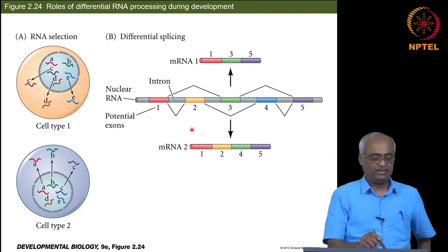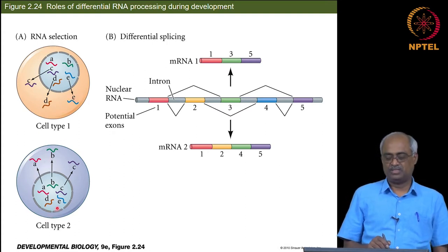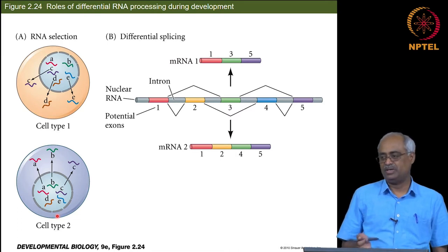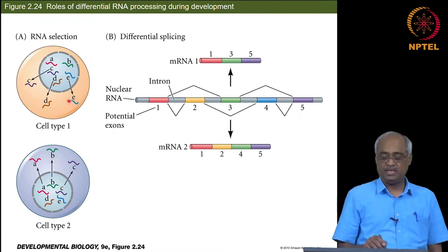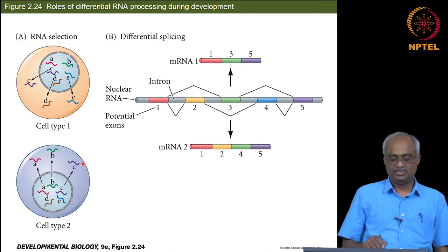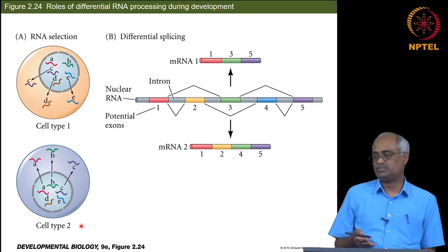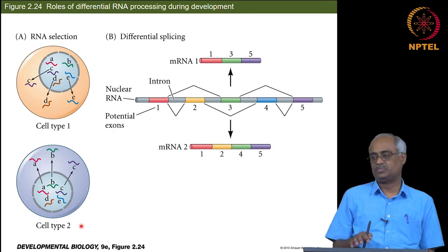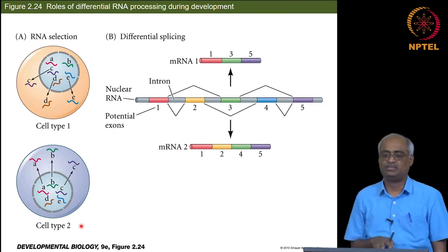If you look at diagram A, in both cell types you have five different messenger RNAs being transcribed. Five different genes are being transcribed into RNA, and if you look at the cytoplasm, you have CDE coming into the cytoplasm in cell type A, but you have ABC coming out to the cytoplasm in cell type 2. So this is nuclear selection — what is getting exported and what is not.